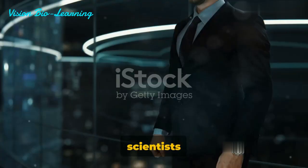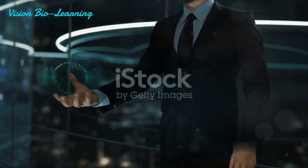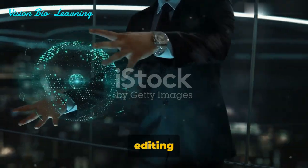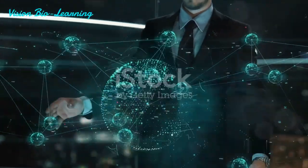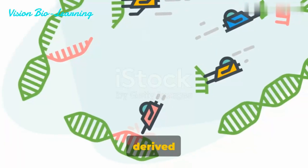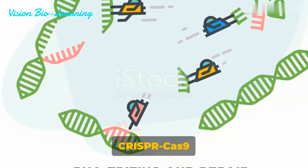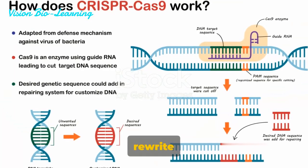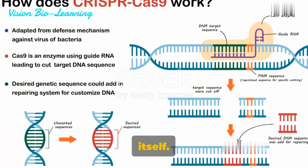Have you ever wondered how scientists can edit our genetic code? It's all thanks to genome editing techniques like base editing. This revolutionary tool, derived from the CRISPR-Cas9 system, allows us to rewrite the very blueprint of life itself.